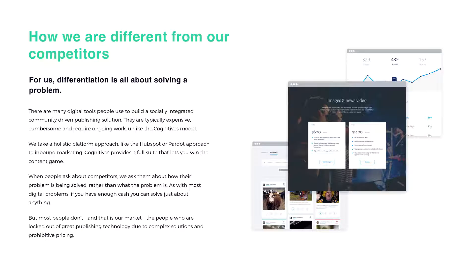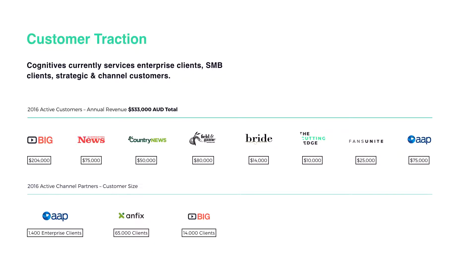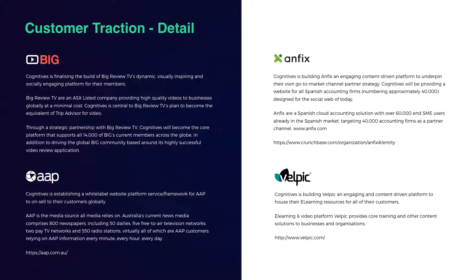In terms of competition, we framed our competitive context differently: the problem is that it's very expensive to build one of these systems. Either you put one of those stacks together and pay $100,000 to $500,000, or you don't. If you don't, you're locked out of the technology. So we're actually saying we're the alternative choice — the competitive context is between us and paying to put the stack together.